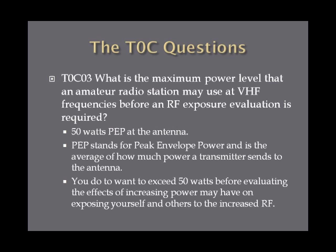What is the maximum power level that an amateur radio station may use at VHF frequencies before an RF exposure evaluation is required? For VHF, it's 50 watts PEP at the antenna. PEP stands for peak envelope power, and is the average of how much power a transmitter sends to the antenna. You do not want to exceed 50 watts before re-evaluating the effects that increasing power may have on exposing yourself and others to RF radiation. So remember 50 watts for VHF.